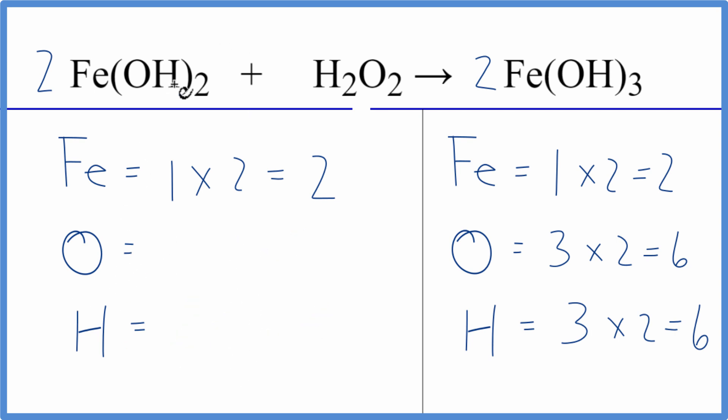Let's do the oxygens. We have 2 times 1, that's 2, times 2, that gives us 4. Plus we have these 2 here, so the oxygens are balanced.